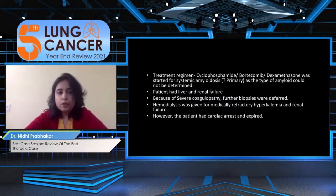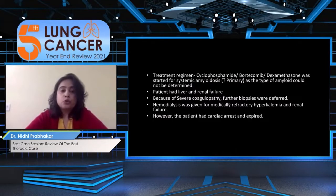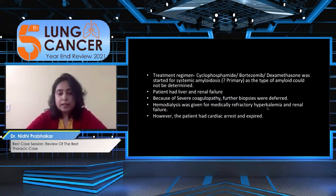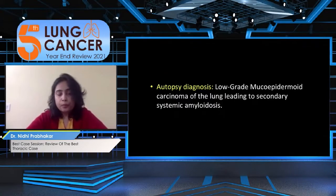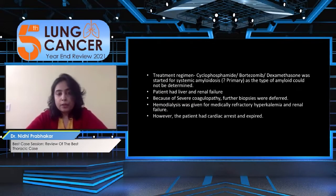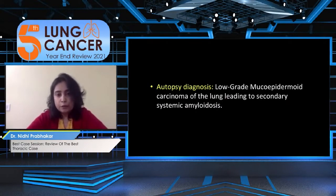At our center, because the patient had liver failure and severe coagulopathy, no biopsy could be performed. Treatment was started with a primary suspicion of primary systemic amyloidosis, and hemodialysis was given for renal failure. Unfortunately, the patient had a cardiac arrest and expired. However, the autopsy diagnosis provided an important learning point.